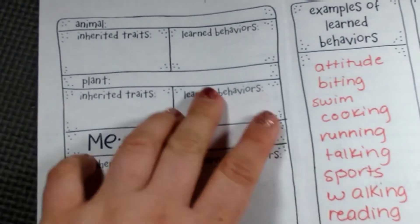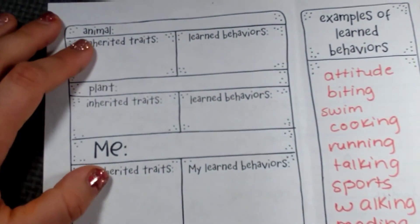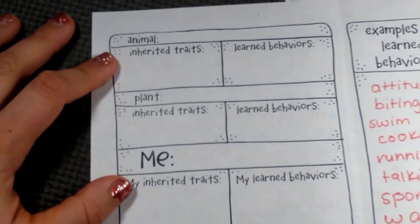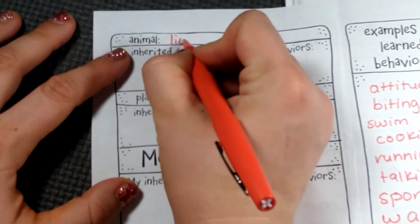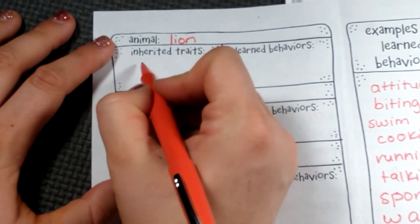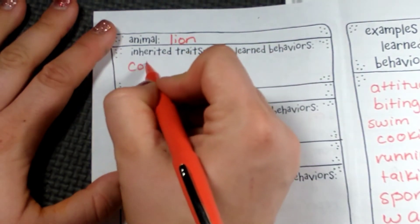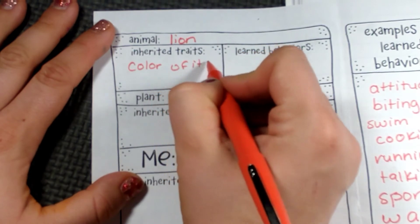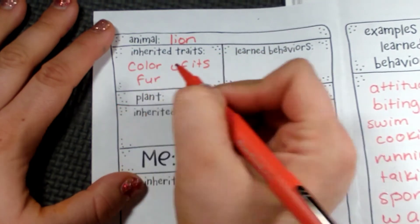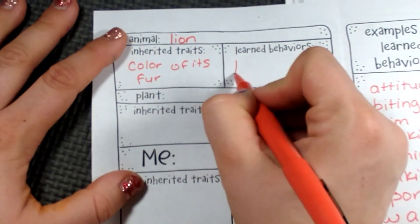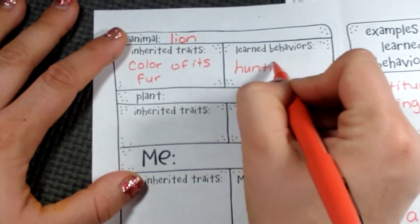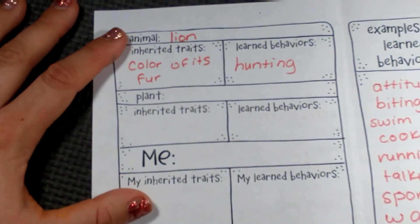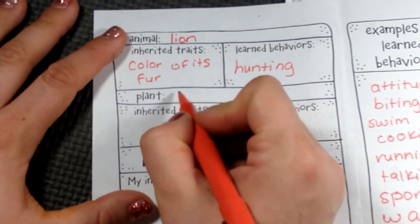Let's use an animal — a lion. A lion's inherited trait would be the color of its fur. A learned behavior that they would have to learn how to do is hunting. They have some natural instincts, but they don't know how to actually hunt. Their mom has to teach them how to do it.